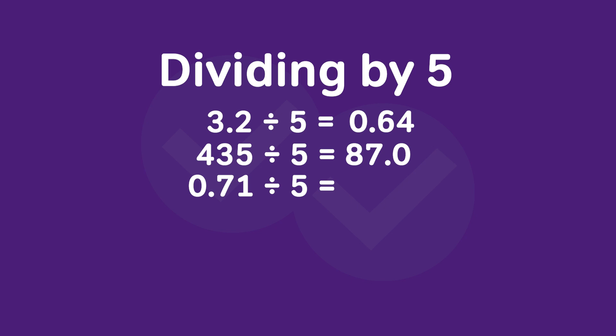One last example. First, we'll take our dividend of 0.71 and double it to get 1.42. And now we'll take our decimal point and move it one space to the left to get 0.142.